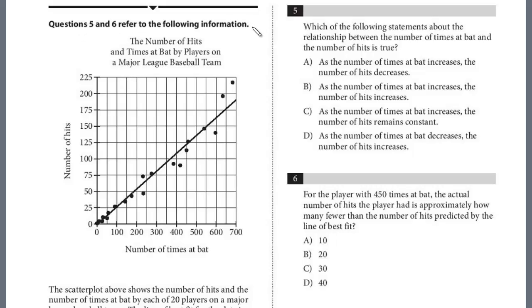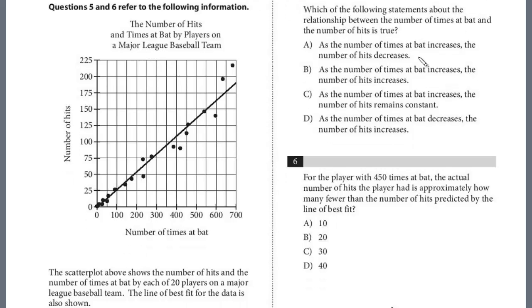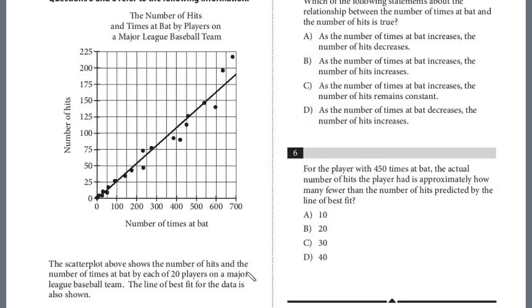Still early on in the section, not too difficult. We have paired questions 5 and 6 referring to this information. The scatterplot above shows the number of hits and the number of times at bat by each of 20 players on a Major League Baseball team. The line of best fit for the data is also shown.